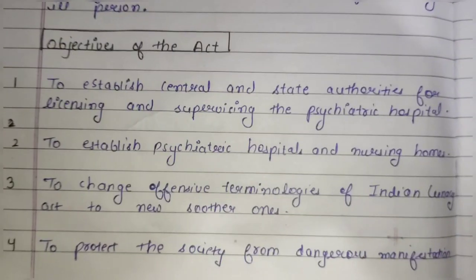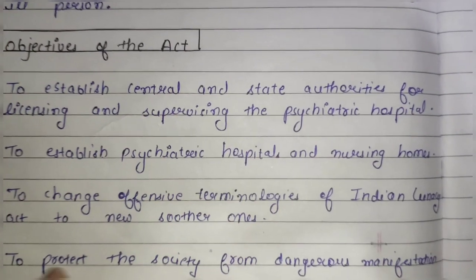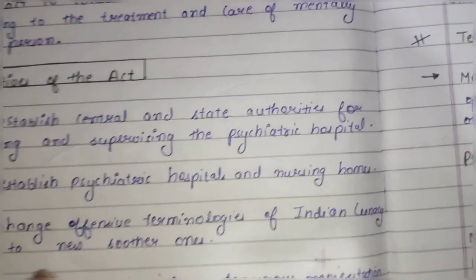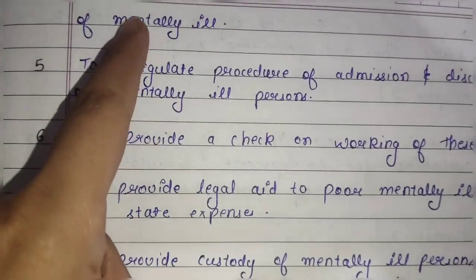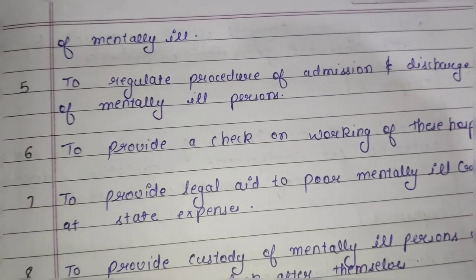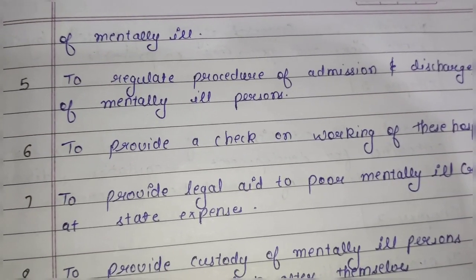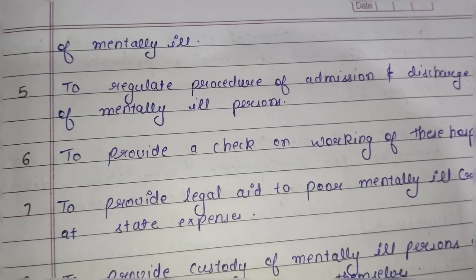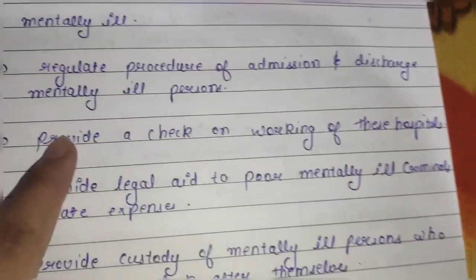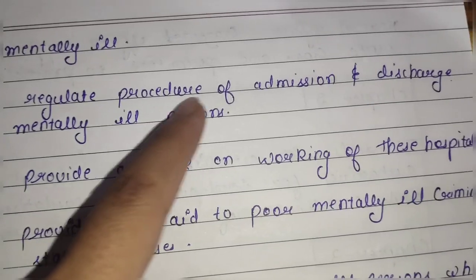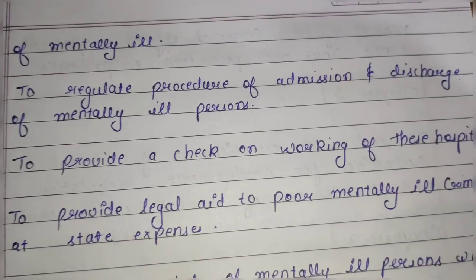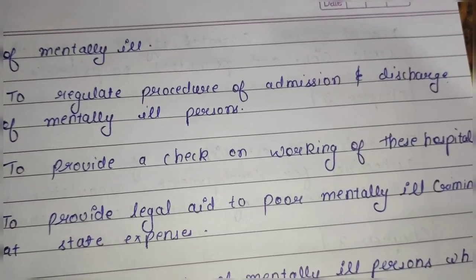The fourth objective is to protect society from dangerous manifestations of mental illness — means to protect society from mental illness. The fifth objective is to regulate the procedure of admission and discharge of mentally ill persons.